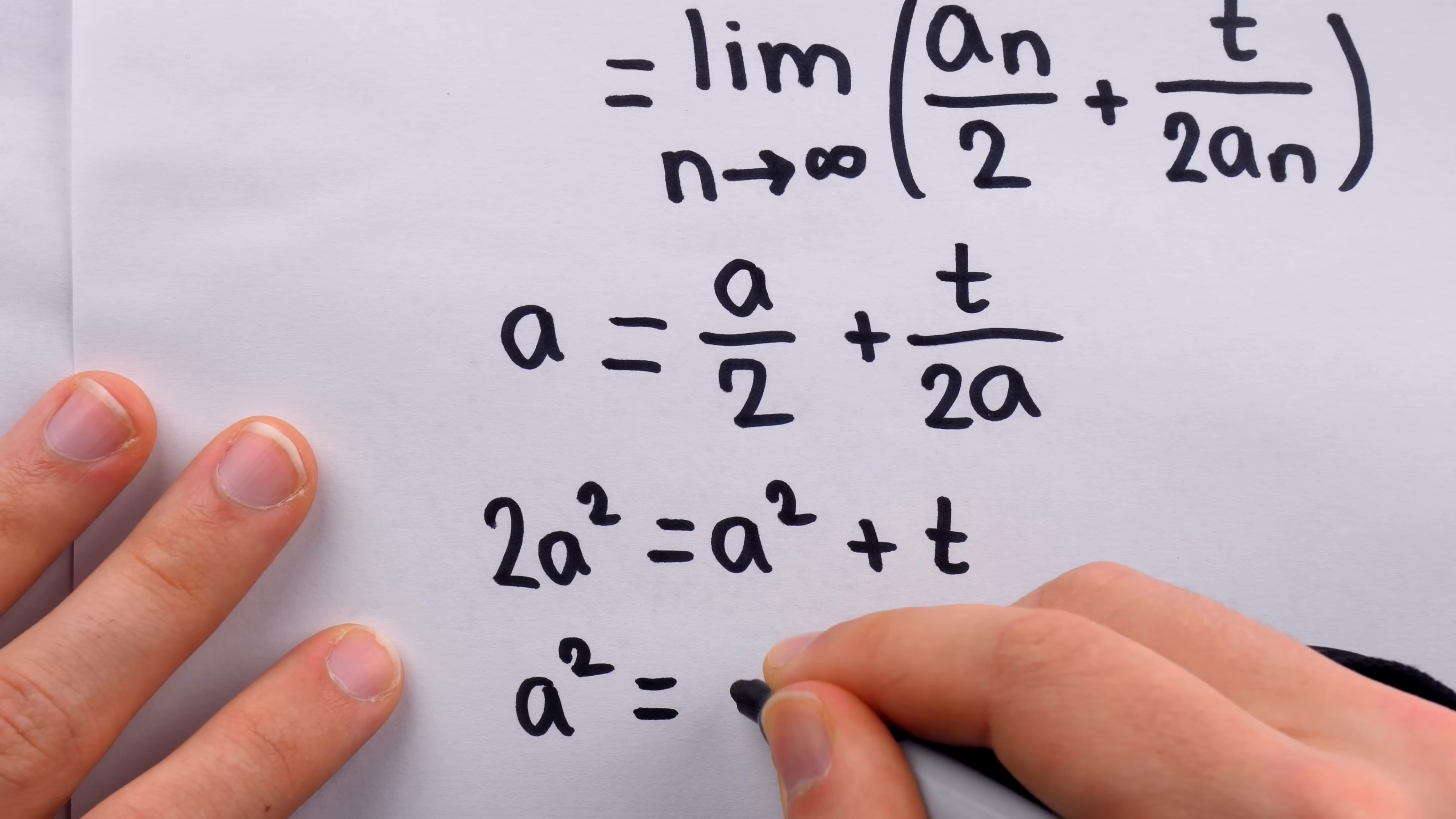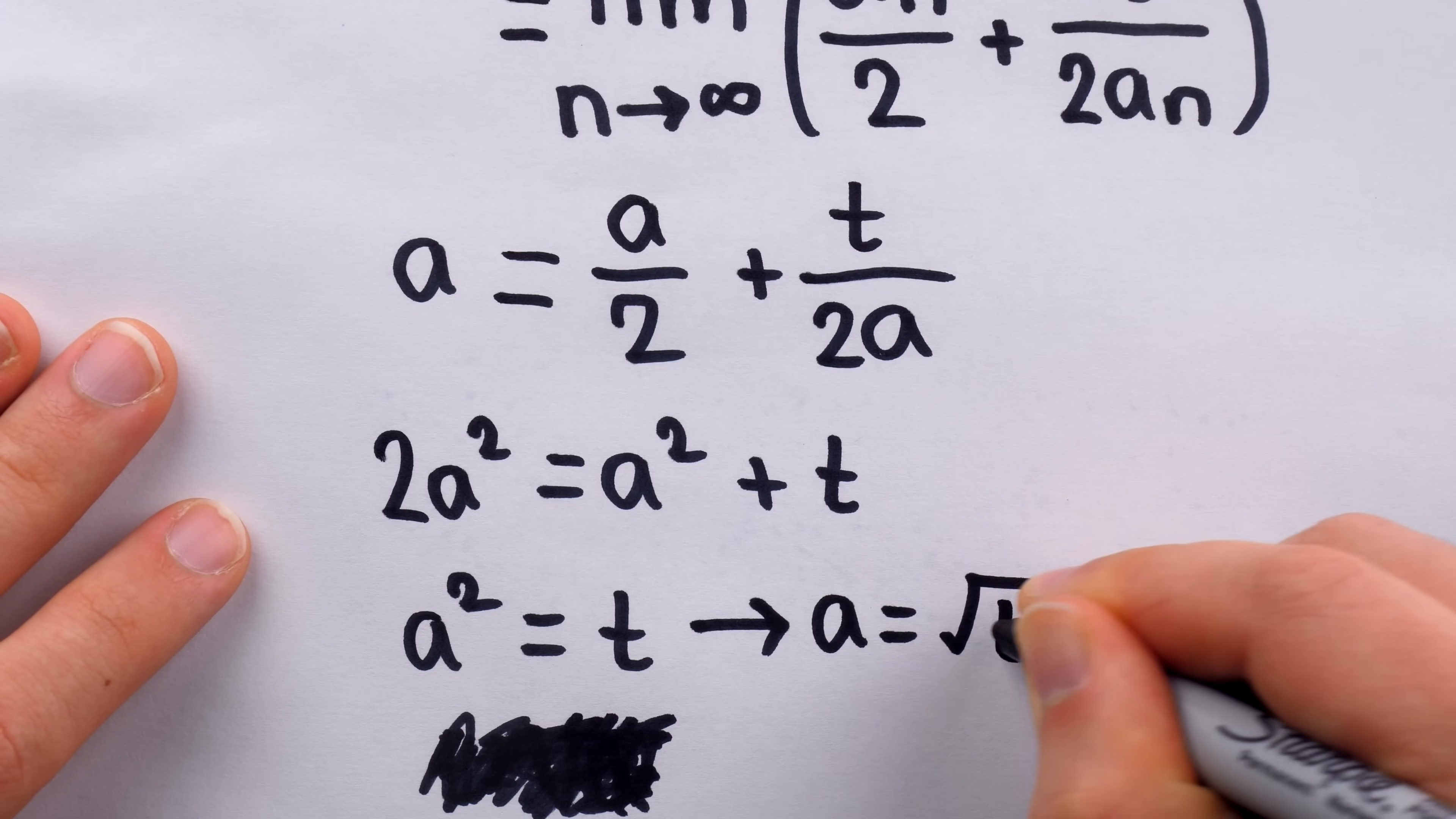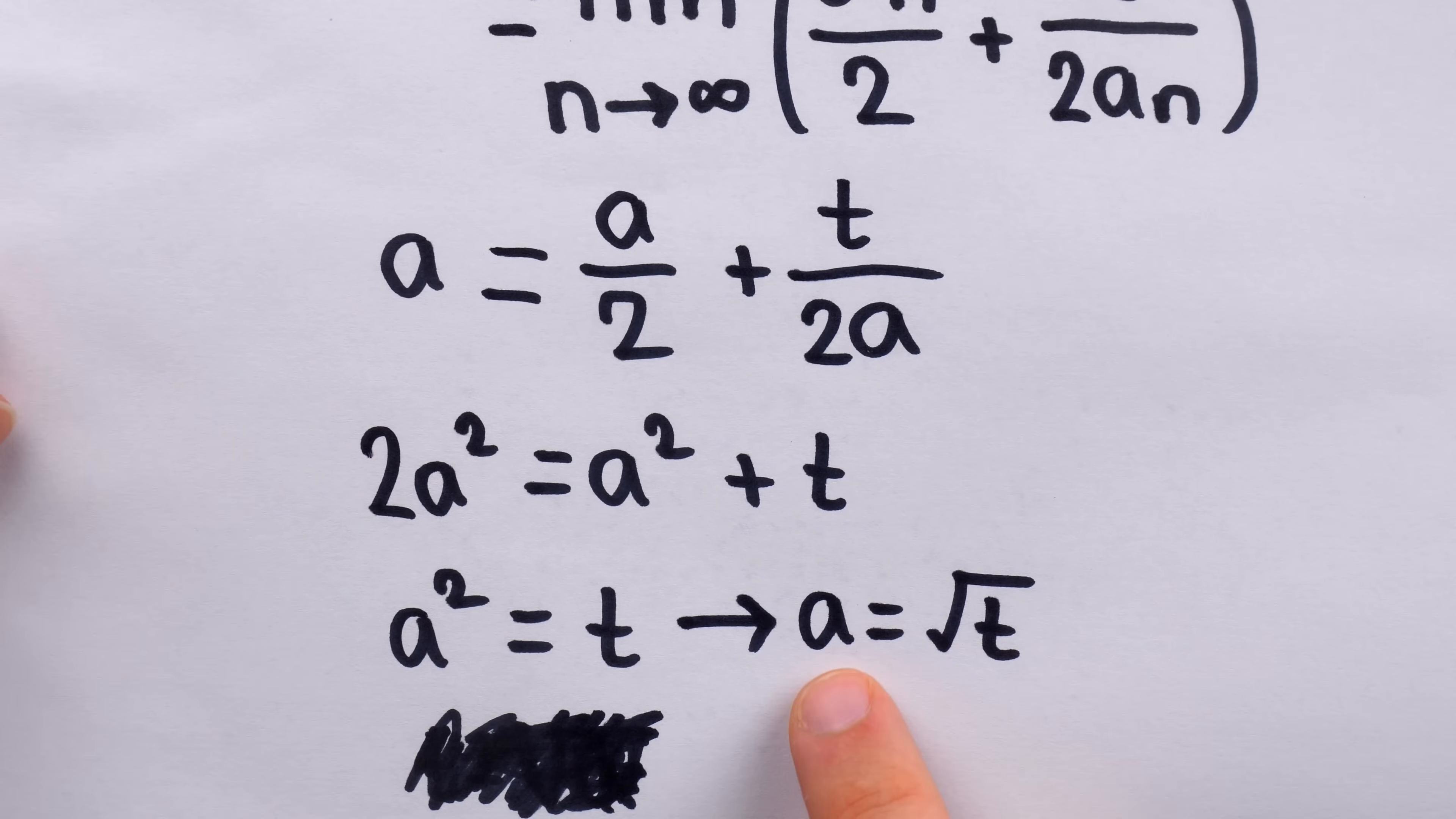Then, just subtract a squared from both sides, so a squared is equal to t. And then, taking the square root of both sides, we have, as desired, that a, the limit of our sequence, is the square root of t. Remember that it's not possible a is negative because our initial guess was taken to be positive. So, all the terms of the sequence are positive, so the limit is as well.